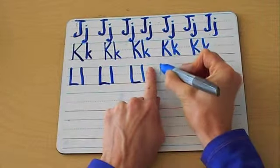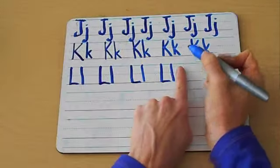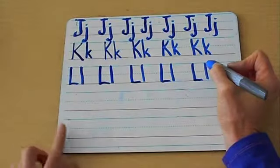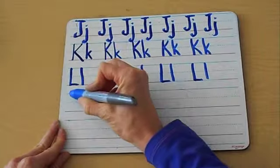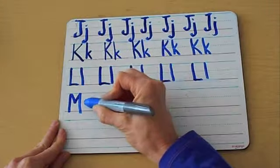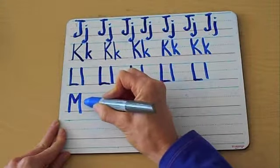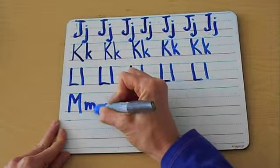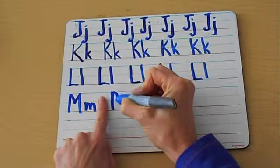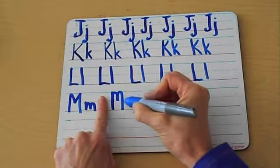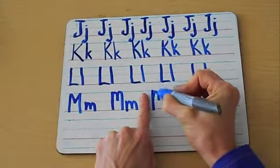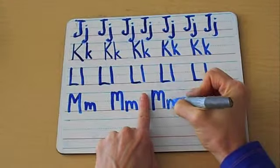One finger space, uppercase L, lowercase L. One finger space, uppercase L, lowercase L. One finger space, uppercase L, lowercase L. M — another tall letter. Lowercase M is here underneath, it's going to be short. It's a short letter. One finger space. M. You can do it this way too, that's fine. And the lowercase M, there you go. Uppercase M, lowercase M.